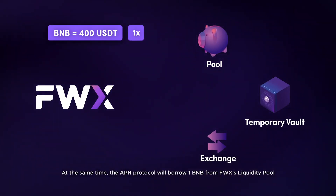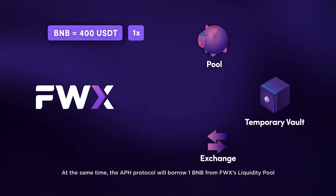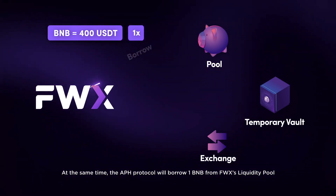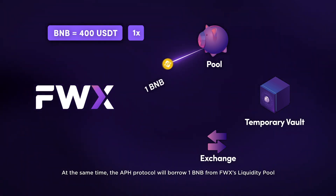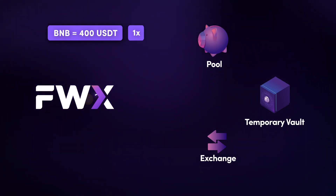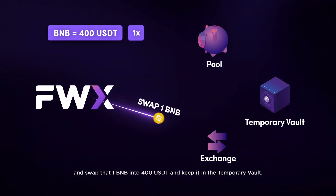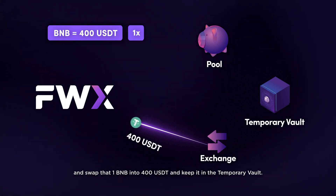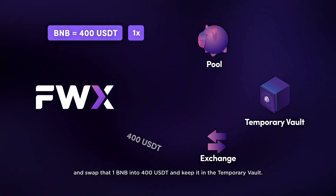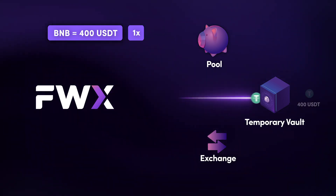At the same time, the APH protocol will borrow 1 BNB from FWX's liquidity pool and swap that 1 BNB into 400 USDT and keep it in the temporary vault.